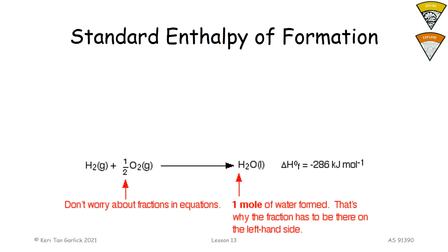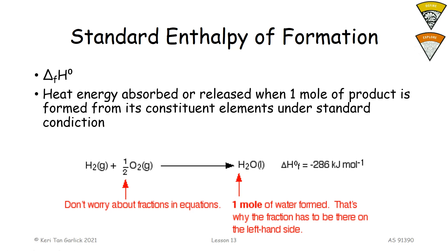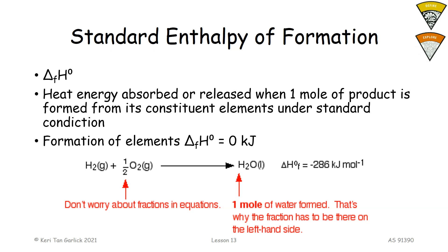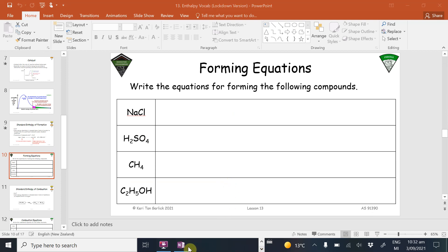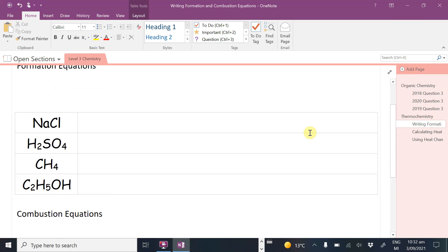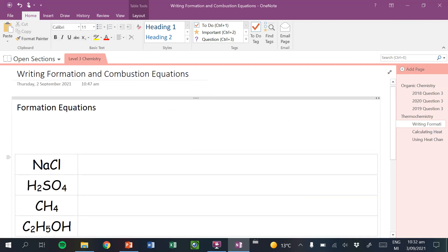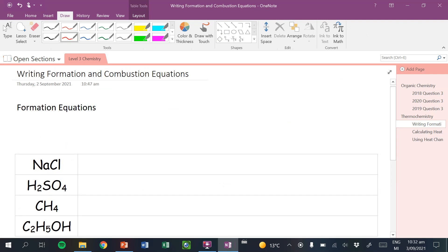Now let's talk about some new vocabulary: standard enthalpy. We're looking at two different examples. The first is formation, referred to as delta Hf — F for formation. That's the heat energy either absorbed or released for one mole of a product formed from its leading elements — basically the elements that make up that compound. If you have any delta H for elements, that's just zero kilojoules, because when you form elements you only need elements. We're thinking in this case of compounds. Let's go through some equations.